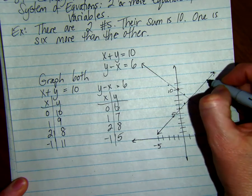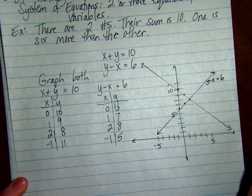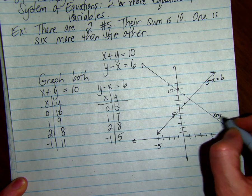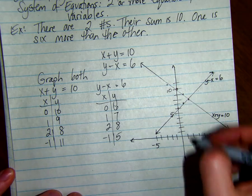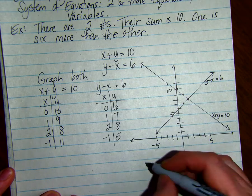This line was y minus x equals six and this was x plus y equals ten. So the lines crossed at the point two, eight.